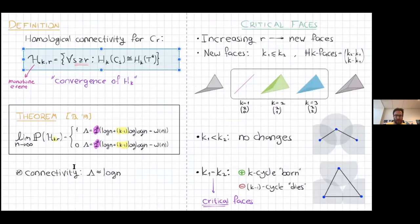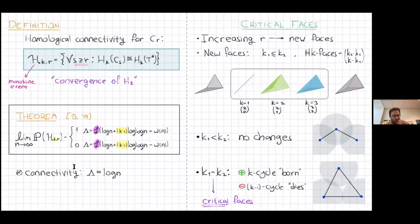The main idea behind the proof comes from Morse theory, connecting analysis and topology. It narrows down to talking about critical faces. As I increase the radius of the Čech complex, faces keep appearing at various radii, and I want to find the critical faces that change the homology.